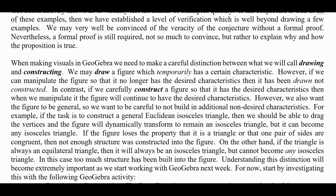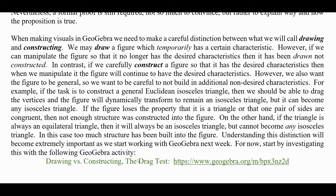When we're making visuals in GeoGebra, we need to be careful to make a distinction between what I'm going to call drawing and constructing. We may draw a figure which temporarily has certain characteristics. However, if we can manipulate the figure so that it no longer has the desired characteristics, then it has been drawn, not constructed, appropriately. In contrast, if we carefully construct a figure so that it has the desired characteristics, then when we manipulate it, the figure will continue to have those desired characteristics. However, we also want the figure to be general, so we want to be careful not to build in additional non-desired characteristics.